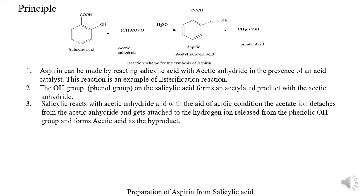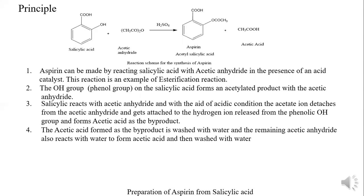Salicylic acid reacts with acetic anhydride under acidic conditions, which helps the acetate ion — CH₃CO — from the acetic anhydride to detach and attach to the oxygen after the release of H from the phenolic OH, forming acetic acid as a by-product. The acetate ion attaches to the oxygen in the OH group of salicylic acid, which is why it is also called an esterification reaction, giving OCOCH₃.